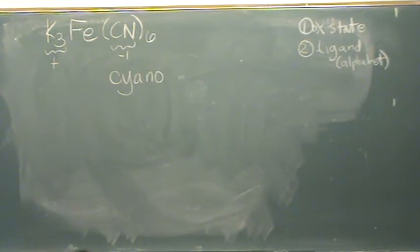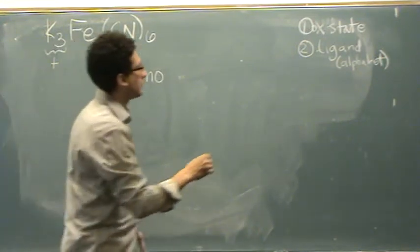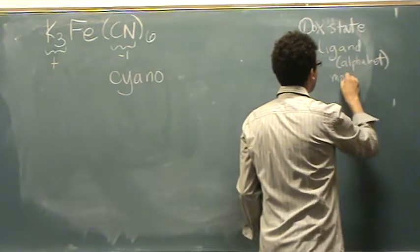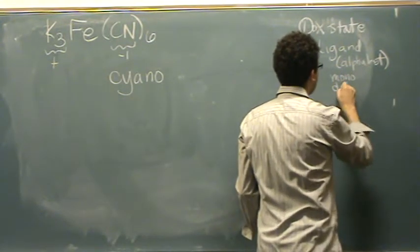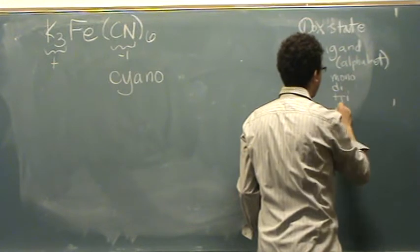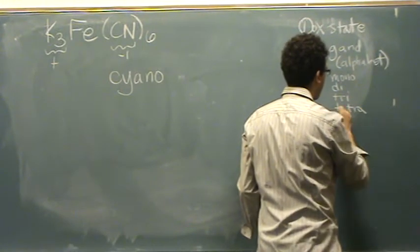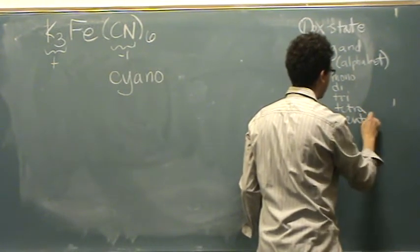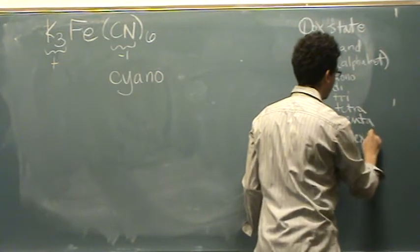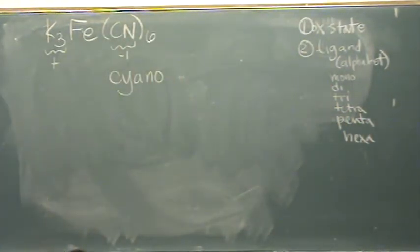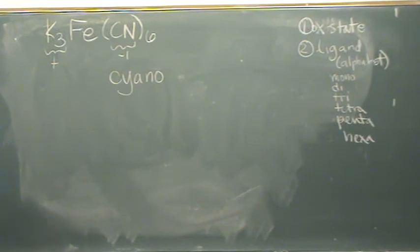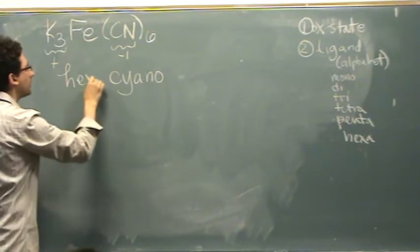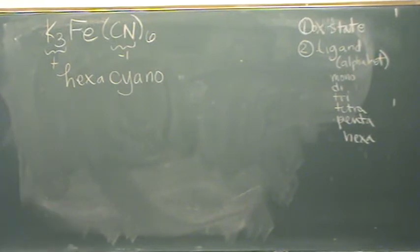The ligand name is cyano. You have to indicate how many there are, and so you have to know some prefixes: mono, di, tri, tetra, penta, hexa, like that. So since there's six, this is hexacyano.